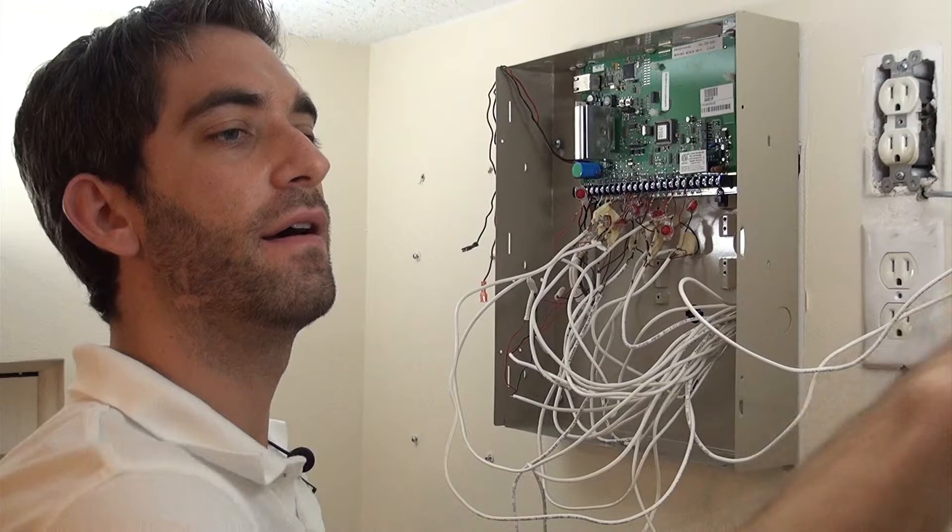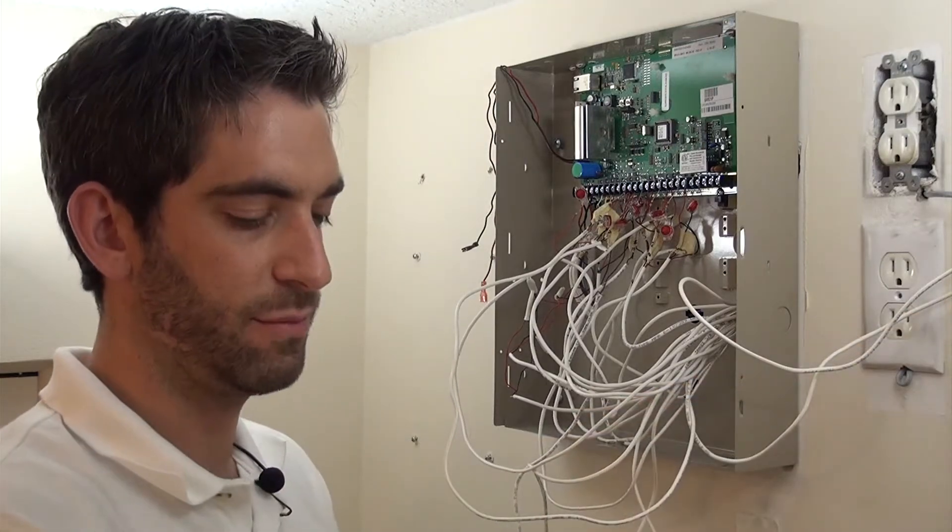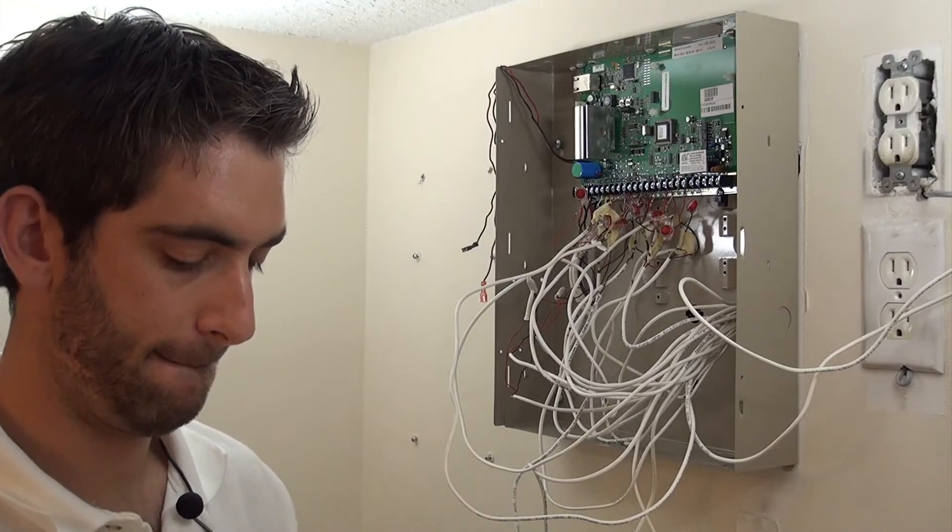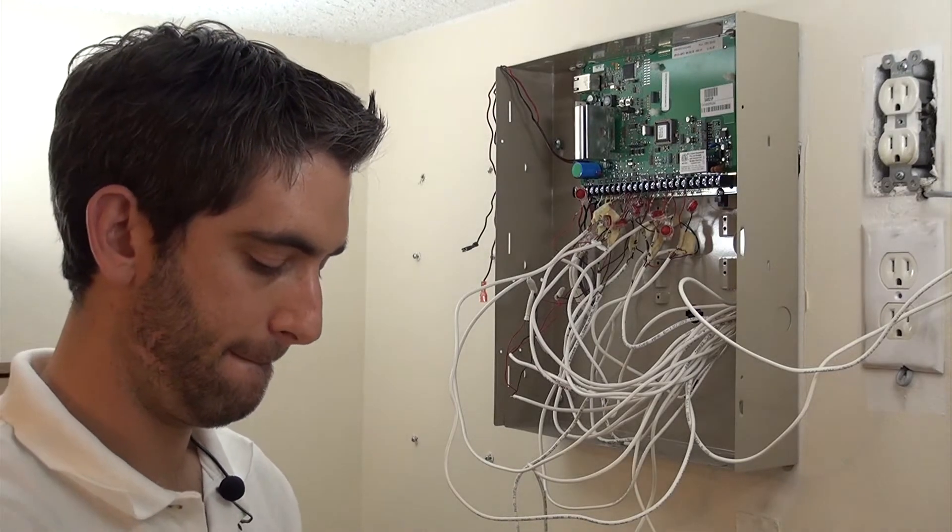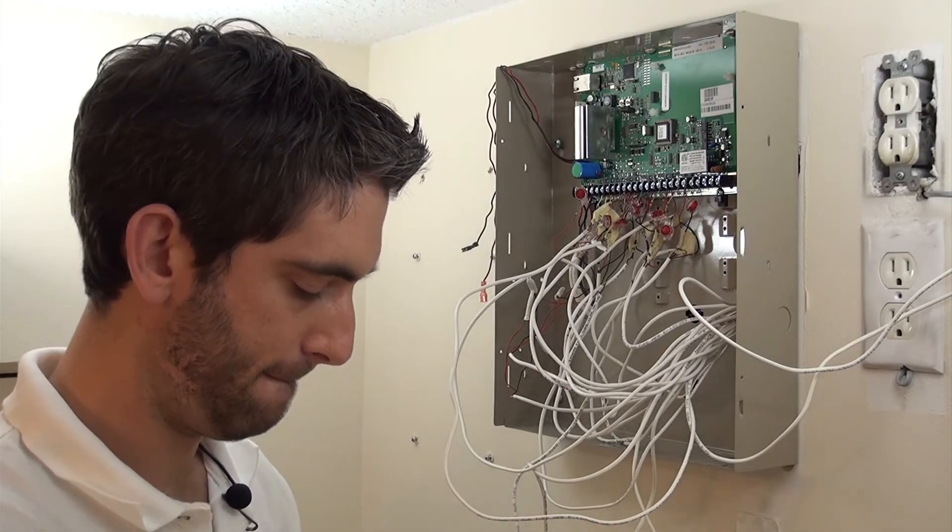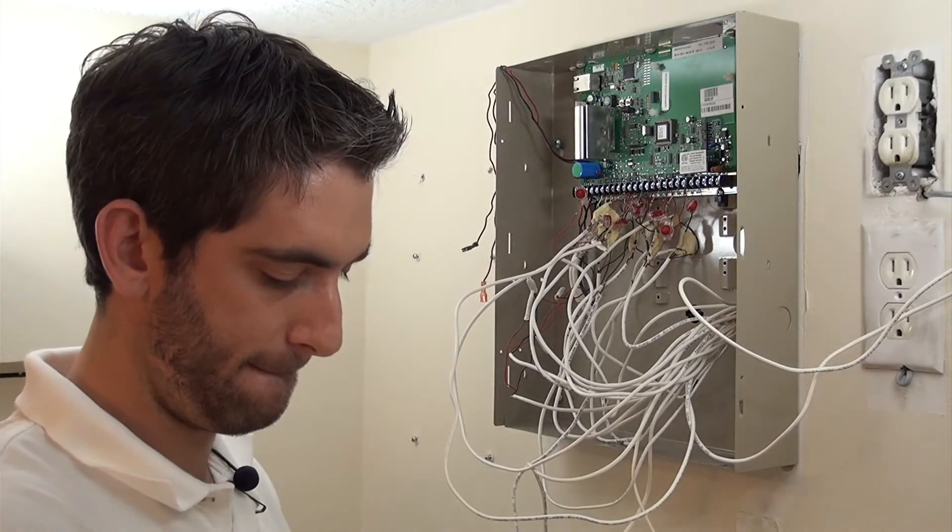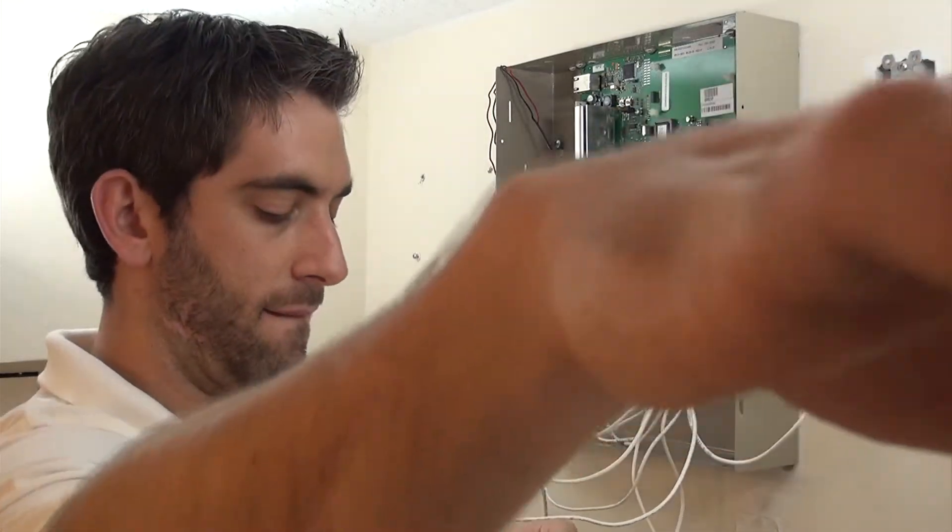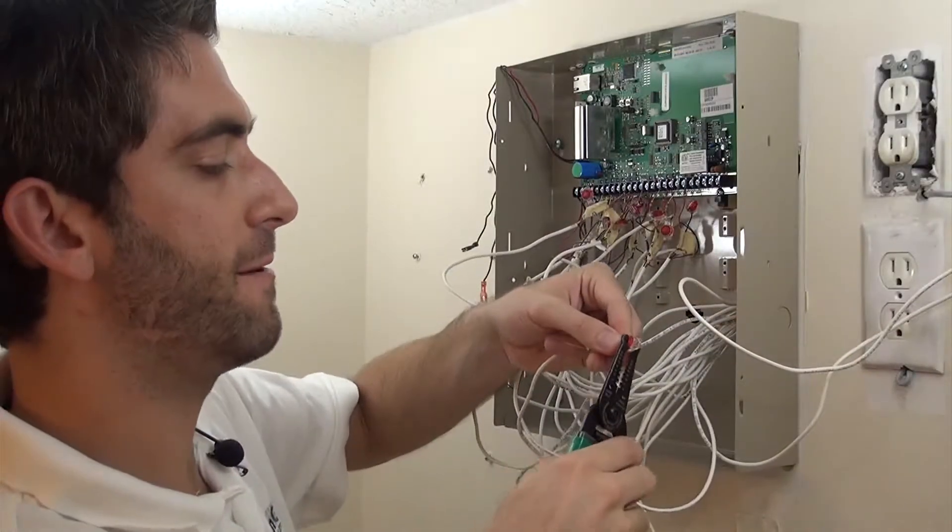Connect our black wire to our 6.2K resistor. Crimp it down.